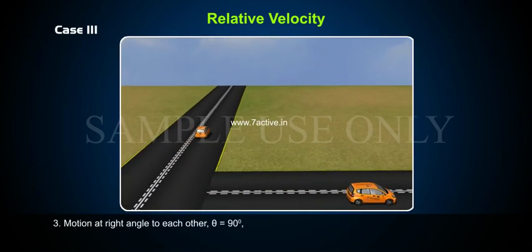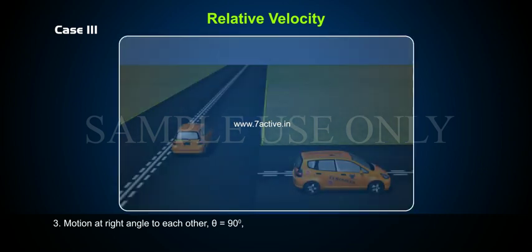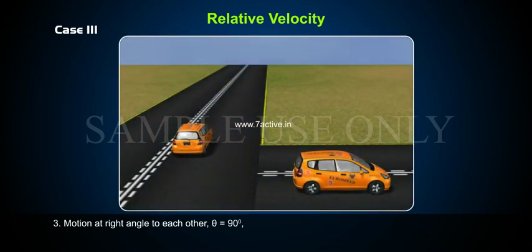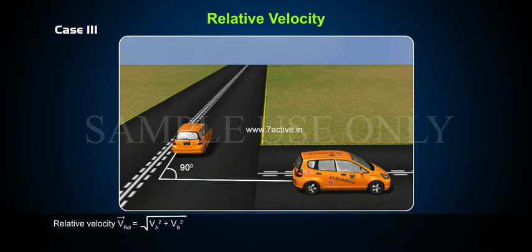Case 3: Motion at right angles to each other, theta is equal to 90 degrees. Relative velocity V relative is equal to square root of VA squared plus VB squared.